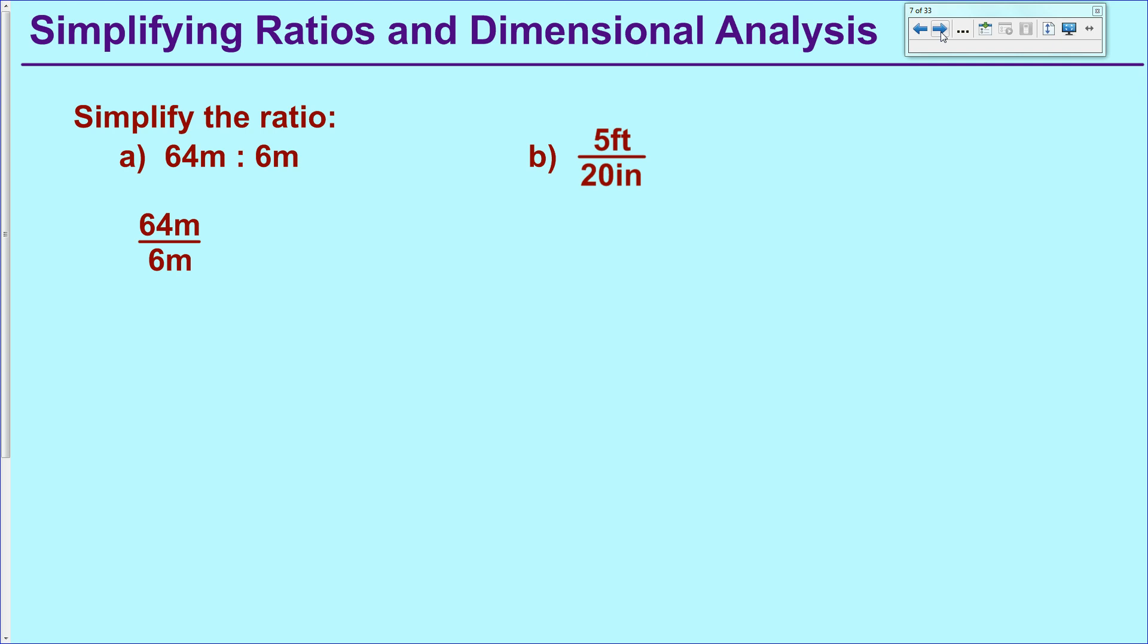The unique thing here that you need to recognize, though, is not only do the numbers simplify, but so do the units. So when I simplify this fraction, not only am I going to simplify the 64 and the 6, but also notice the meters cancel out. And my final answer would be 32 over 3, or I can write that in colon notation again.